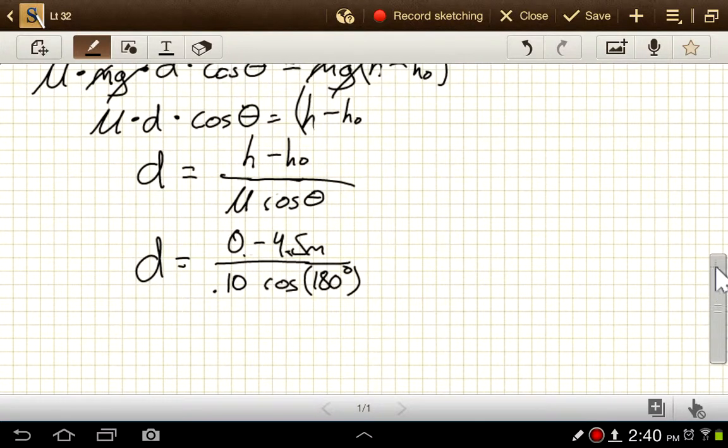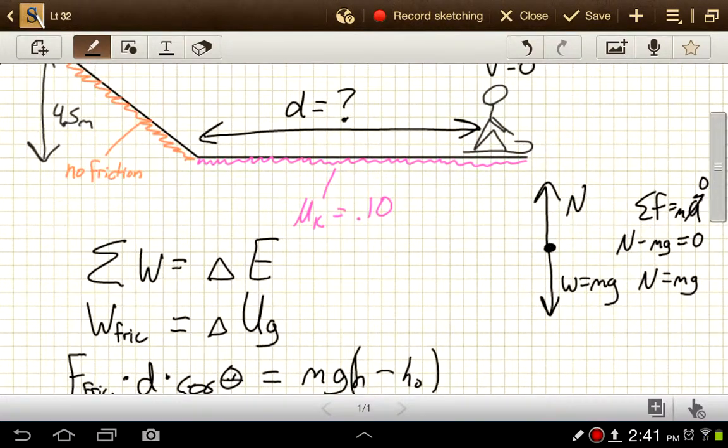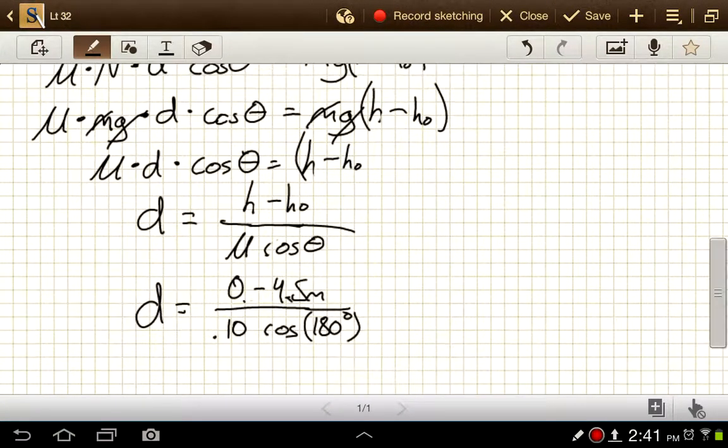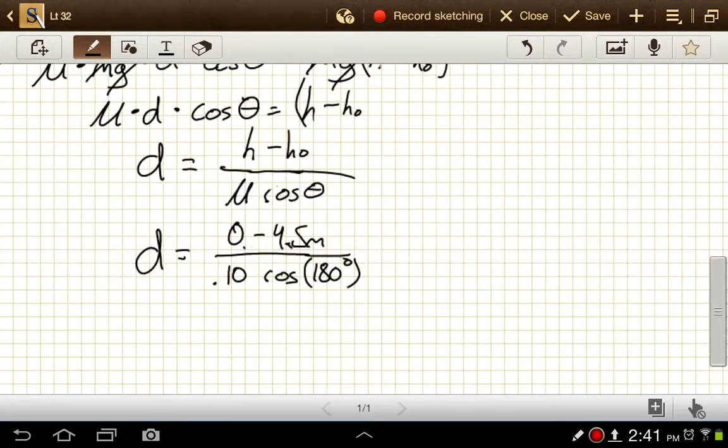All right. Now that's important. Easy mistake to make, especially if you took another physics class where we just said that the potential energy is mass times gravity times height. Really, we can only use that to find change in potential energy from gravity. Okay. So the change in potential energy from gravity, we substitute in there. We've got a negative 4.5 meters divided by 0.1 times cosine of 180 is going to be negative 0.1. And no units on that. So our distance then is going to be 45 meters.